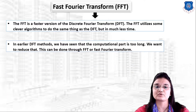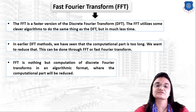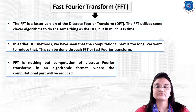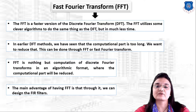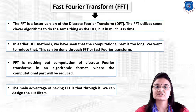In the DFT the computational part is too long, so we use Fast Fourier Transform to reduce that computational part. The FFT computes the DFT in an algorithm format where the computational part is reduced. The main advantage of FFT is that through it we can design filters.